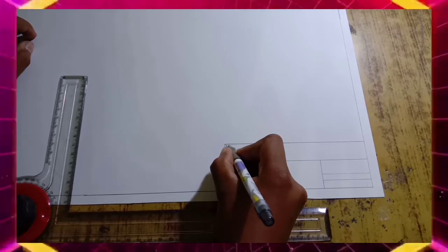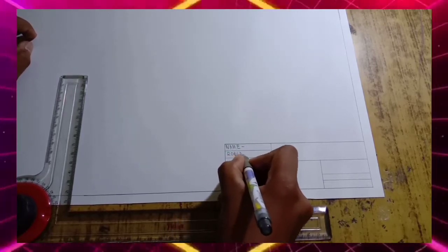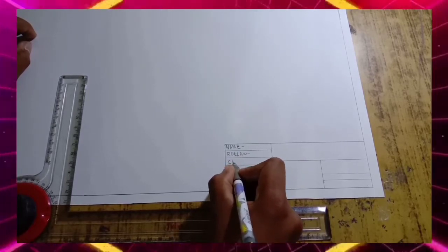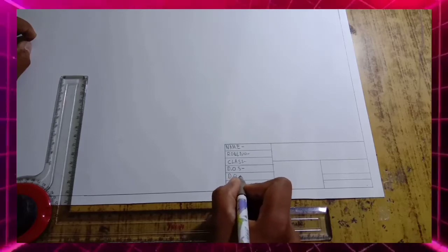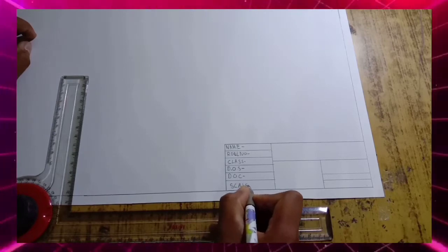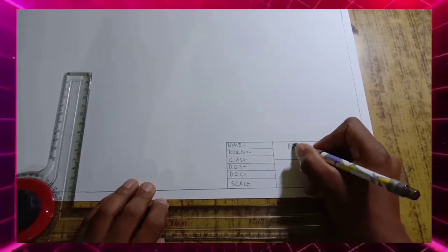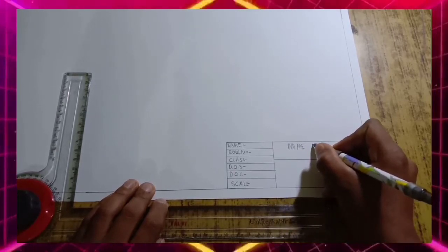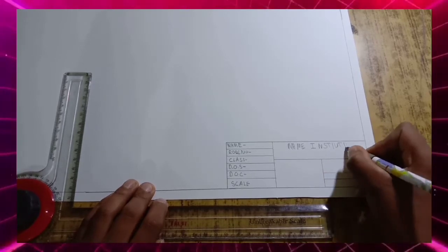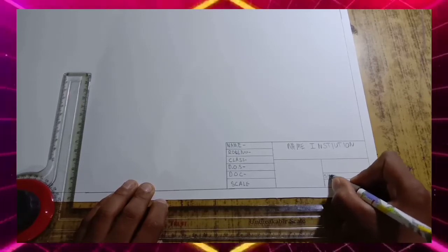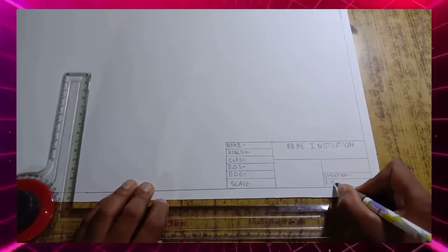Here we write name in capital letters, roll number, class, date of start, date of completion, and scale. Name of the institution, sheet number, and the last box is checked by.